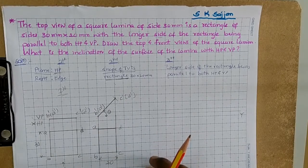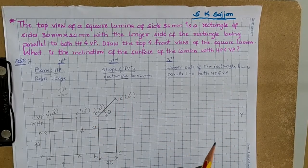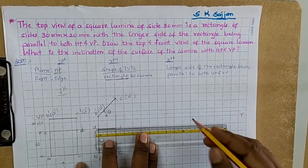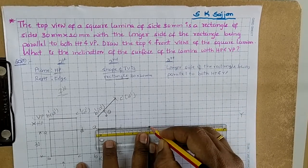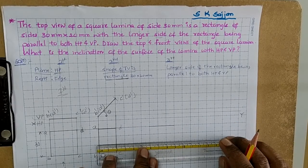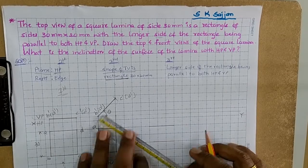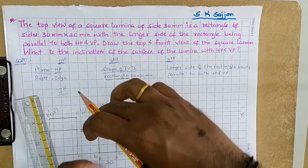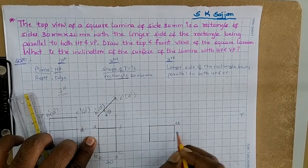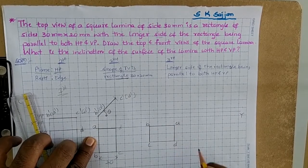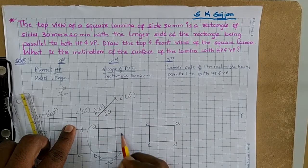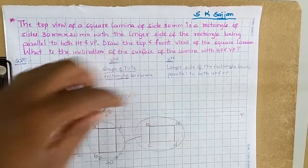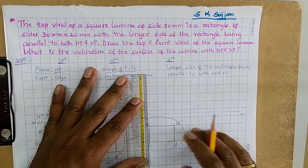Redraw the front view with the condition that A'B' is parallel to the X-Y line. Draw it anywhere below the X-Y line at a convenient distance. Without changing any dimension, redraw A'B'C'D' with the longer side parallel to the X-Y line — that is, parallel to both HP and VP. Now project all the points.